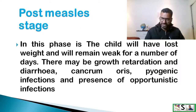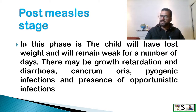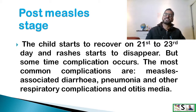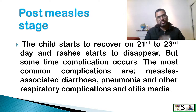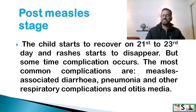Then the post-measles stage starts. In the post-measles stage, the child will have loss of weight and is very weak for a number of days. There may be growth retardation, diarrhea, cancrum oris, pyogenic infections, and presence of opportunistic infections. This stage lasts up to 21 to 23 days, after which the child starts recovering and rashes begin to disappear. However, sometimes the child may go into complications — the most common being measles-associated diarrhea, pneumonia, other respiratory complications, and otitis media.